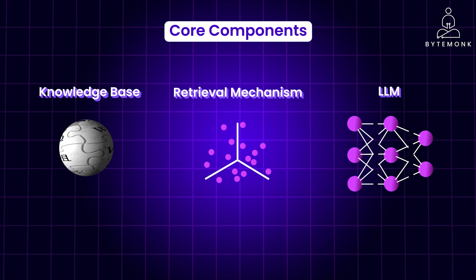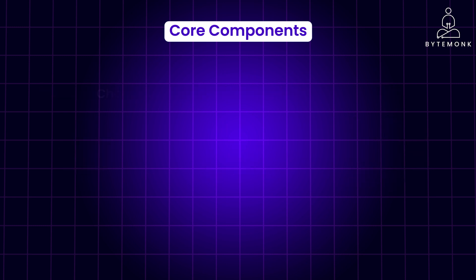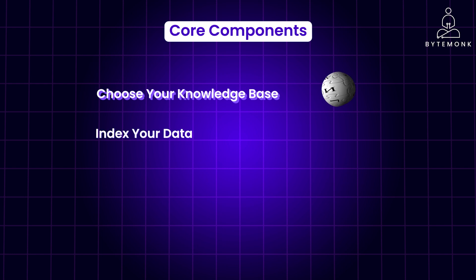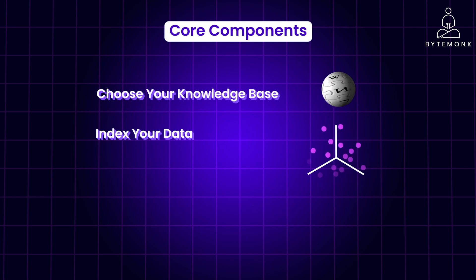In order to build a RAG system, you need to choose your knowledge base first — that is, determine what sources you will use, whether they will be internal documents, web content, etc. Then you need to index your data by transforming your knowledge base into a searchable format, for example by creating vector embeddings for semantic search.